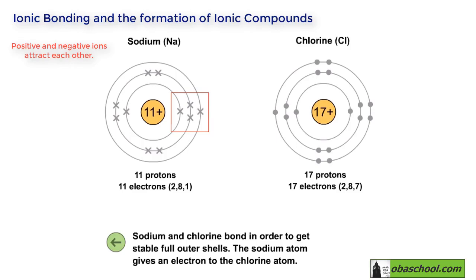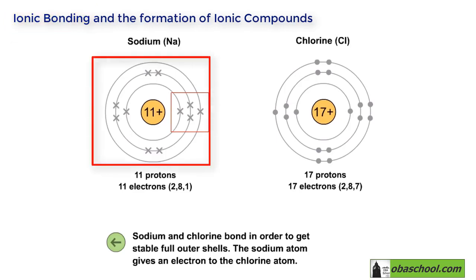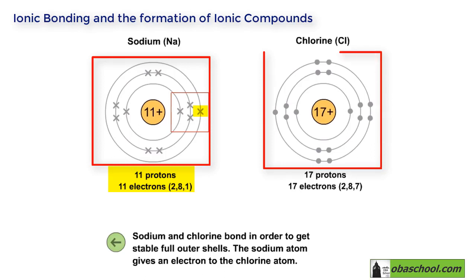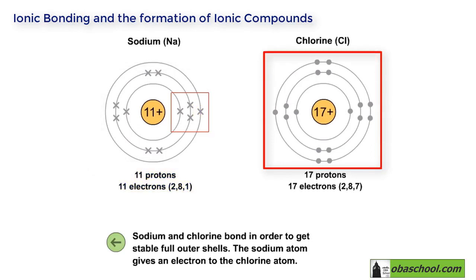You can see the sodium atom, which has 11 protons and 11 electrons. Its electron configuration is 2,8,1 — with one electron in its outermost shell. As for chlorine, it has 17 protons and 17 electrons.